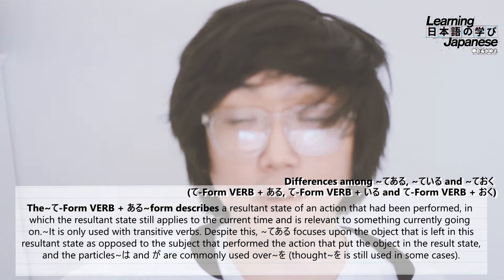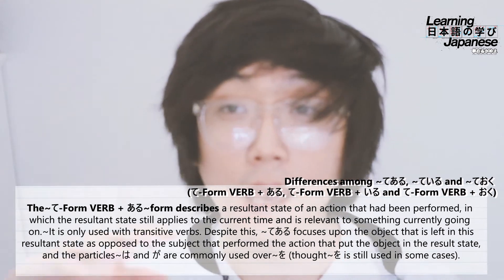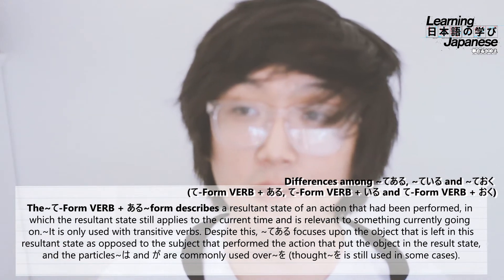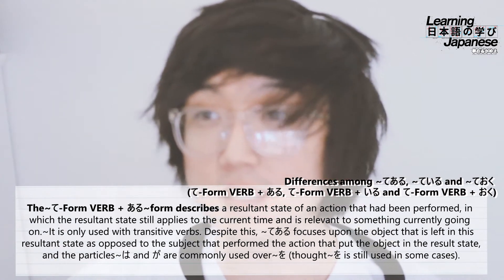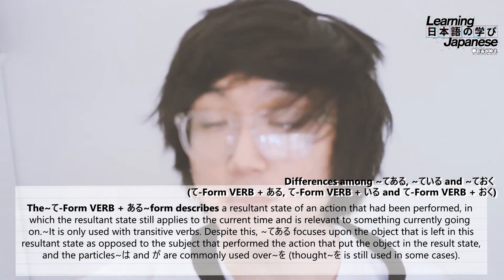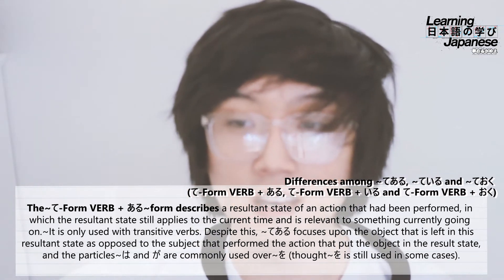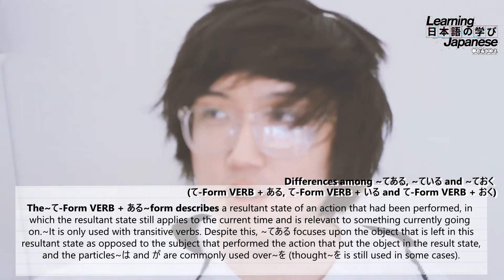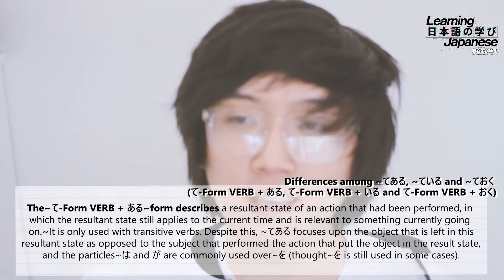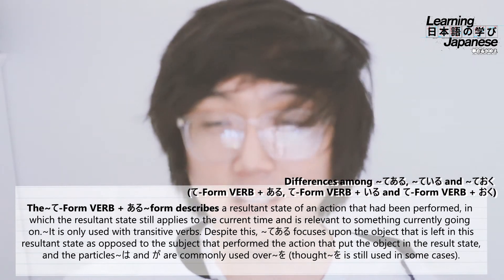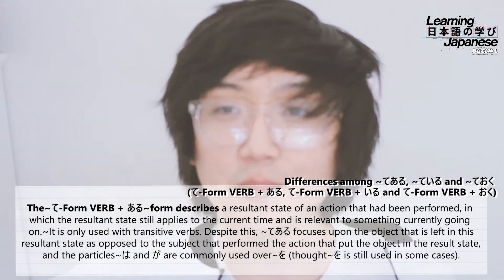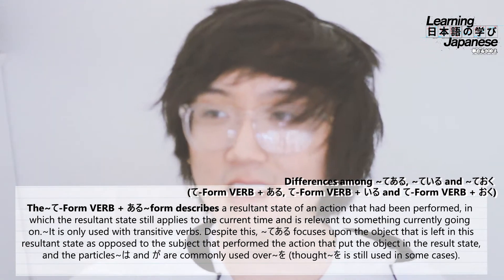With te form plus aru, the resultant state continues up to now and is still ongoing — the two people are still married. There's also an implication that the action was beneficial or needed to be done ahead of time. For example, maybe the parents were trying to stop them from getting married, so it had to be done right away — and it was done, so they're still married now.